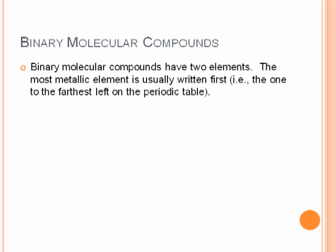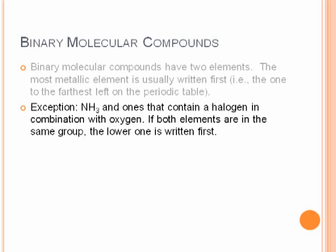For binary molecular compounds, we have two elements, both of which are nonmetals, or there's an occasional metalloid thrown in, like silicon. The one that's most metallic, which is the farthest left on the periodic table or the farthest down a column, is typically written first, with a few exceptions. NH3 is ammonia, or there are certain ones with a halogen in combination with an oxygen that don't follow that rule, but in general that is certainly the case.